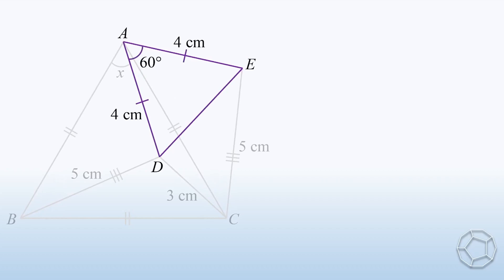The angle at A is clearly 60 degrees. Also, because AD is equal to AE, so angle D is equal to angle E. Let's call them y.